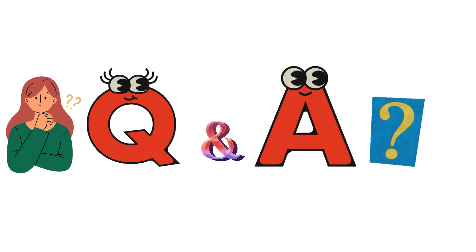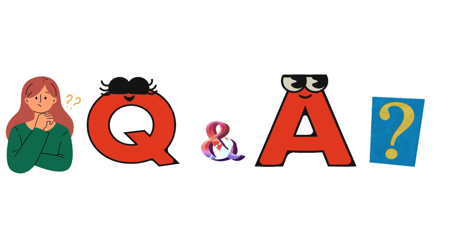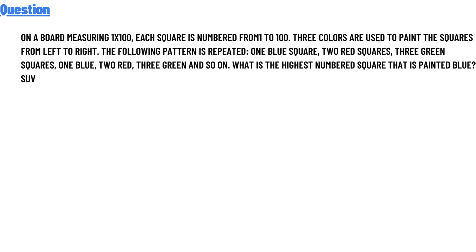Today's question: on a board, there is a 10 by 10 grid with 100 squares, each numbered from one to one hundred. Three colors are used to paint the squares from left to right in the following repeating pattern: one blue square, two red squares, three green squares — one blue, two red, three green, and so on.